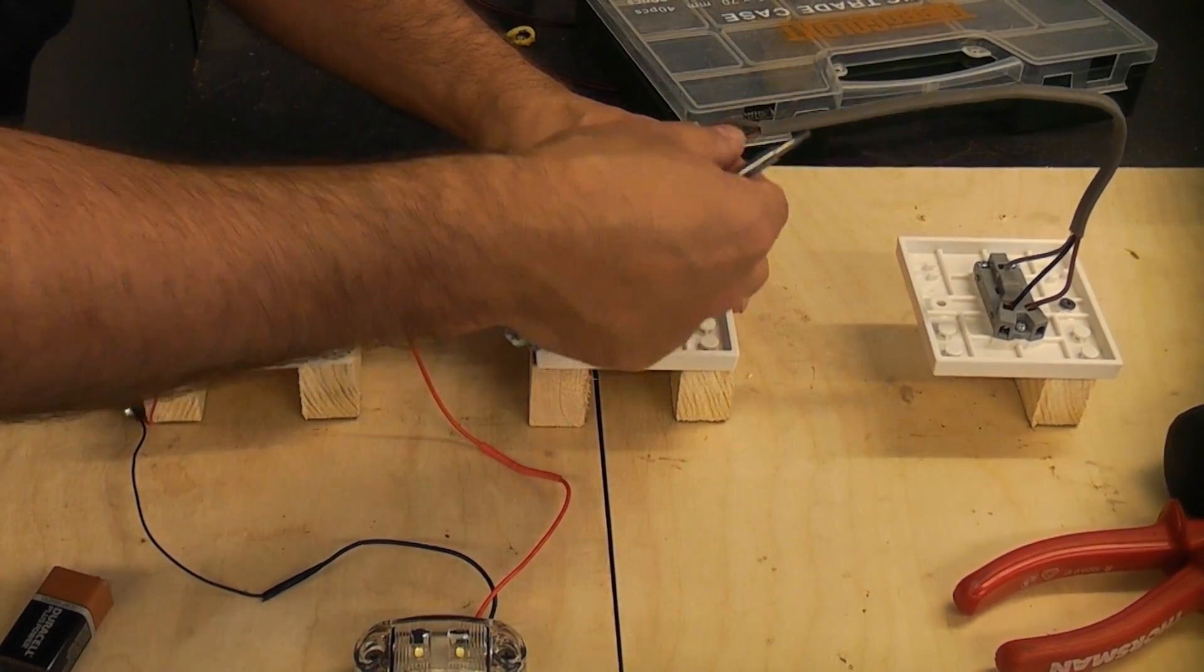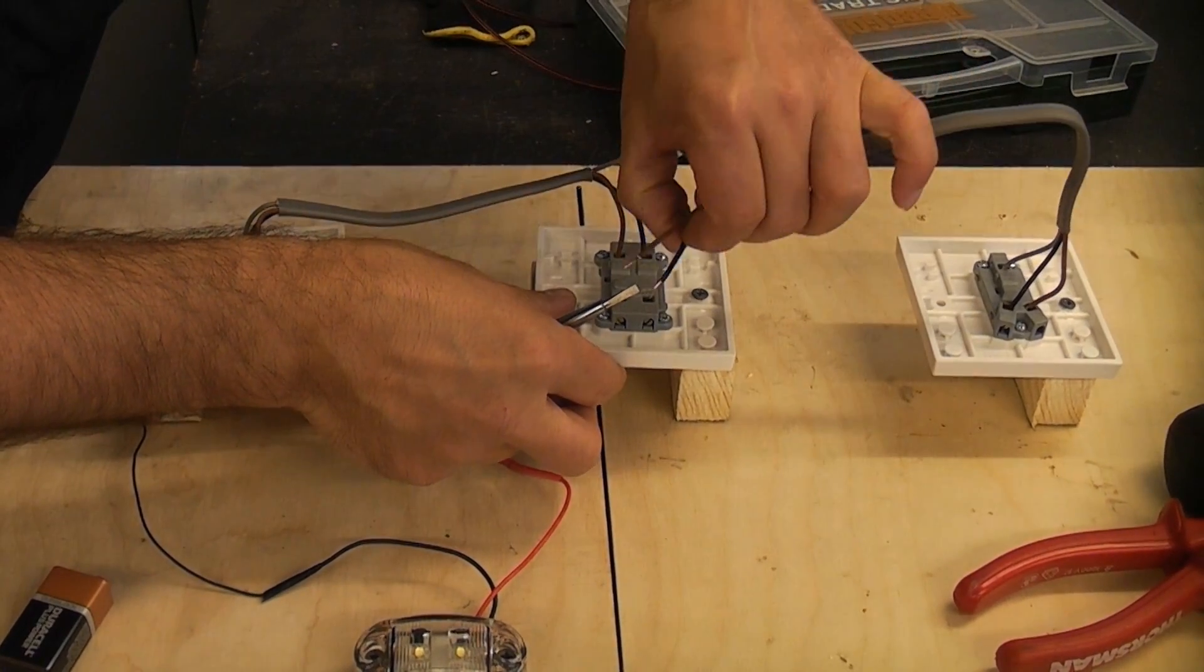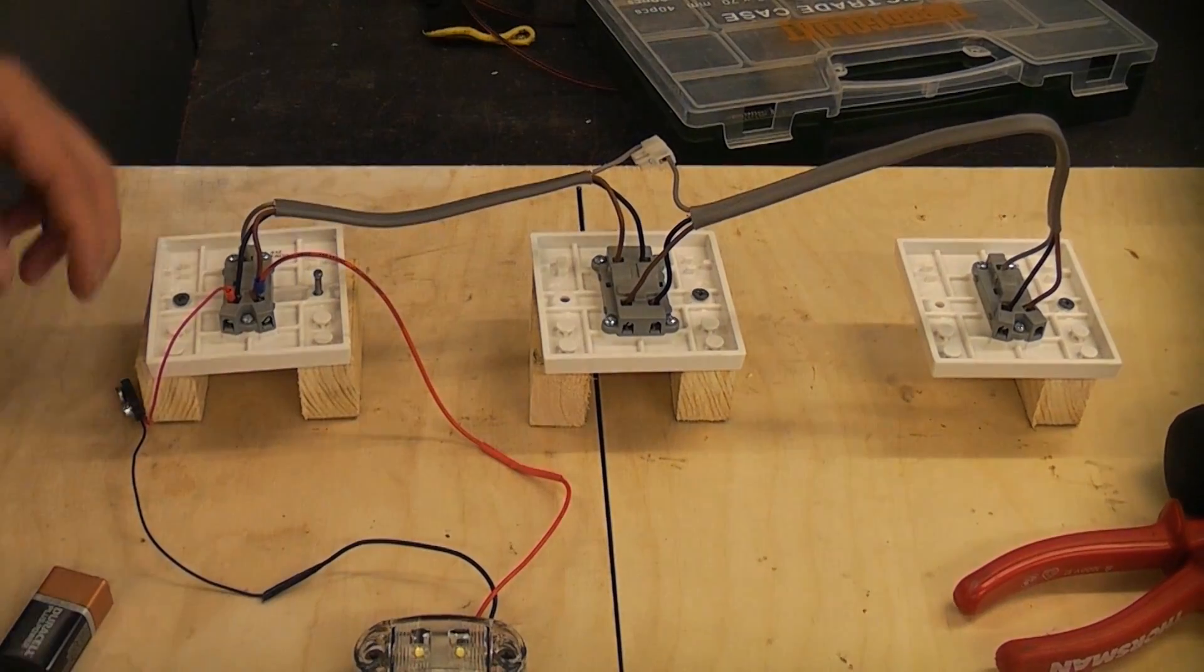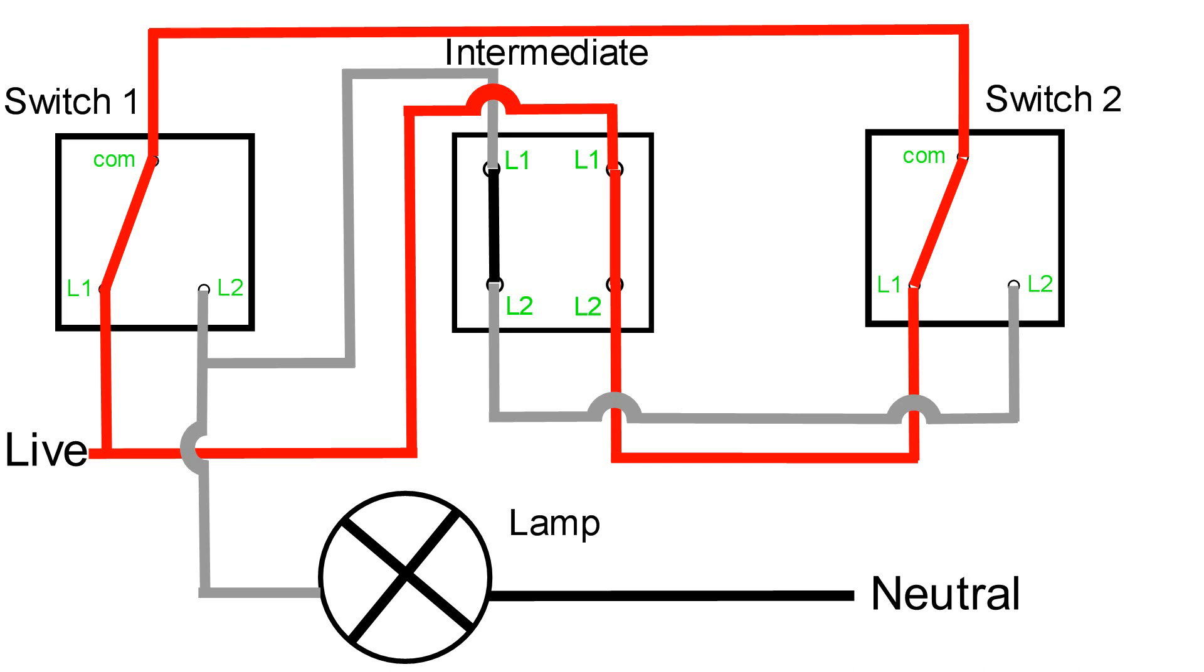We're now going to take the other cable from the other switch and we're going to put those into the other terminals at the bottom into the L2. Once you've done that you can then restore the power, in this case we're going to reconnect the battery. You now have a light that you can switch on or off from the three separate locations.